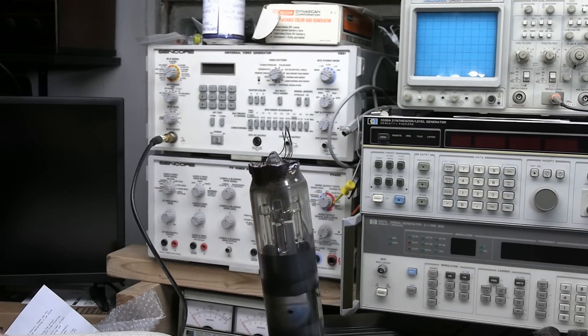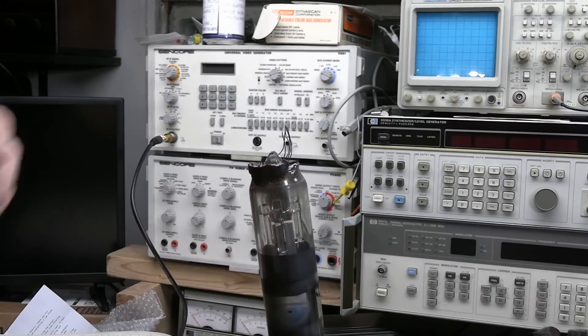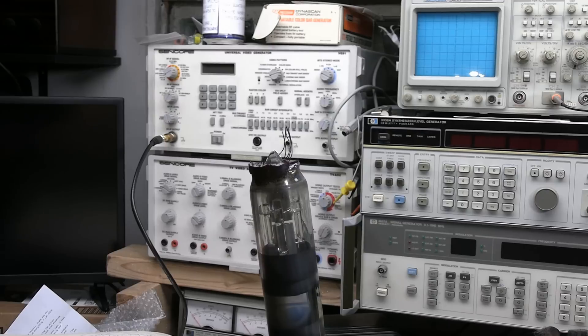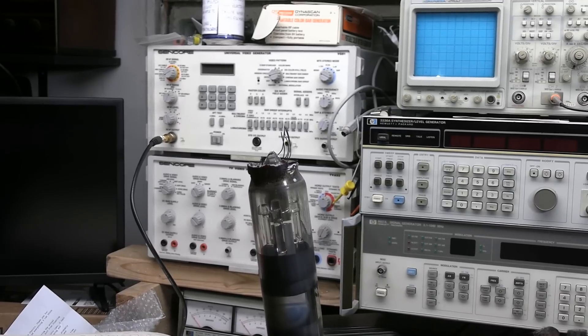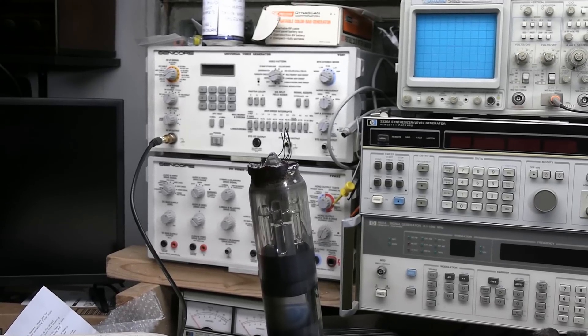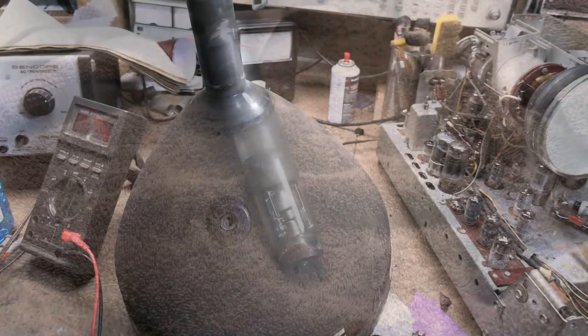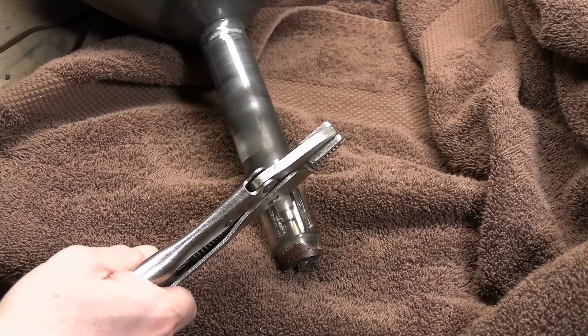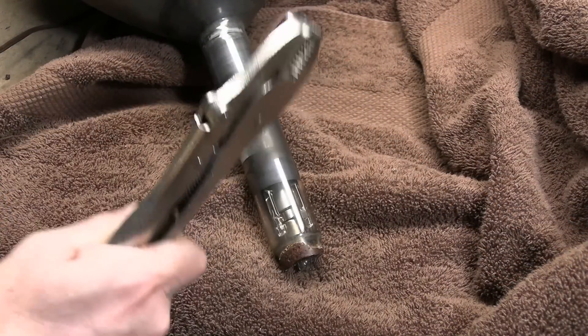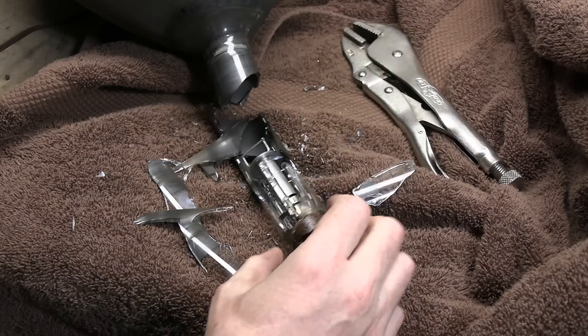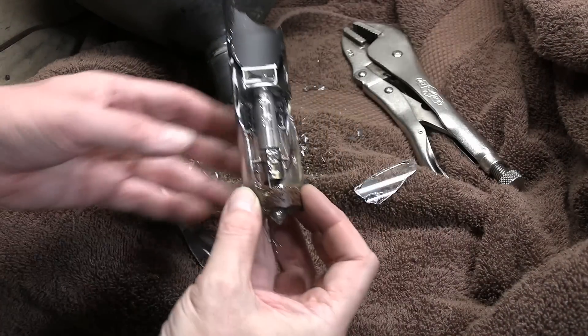Notice the getter has now gone completely white as we let the air in. Now to get at that gun, we're going to need to break the neck. That's going to get a little bit messy, so I'm not going to do that upright here on the workbench like this, because then when I break this, glass will go everywhere. I'm going to lay it on its side. I guess I will do it on the workbench, but I'll put a towel down. I'm going to do this very scientifically. And there we go.